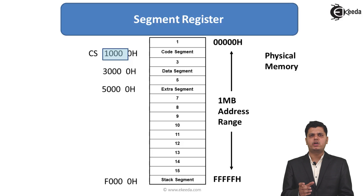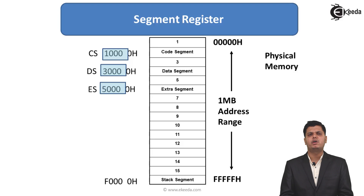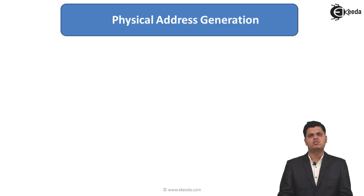Now we are going to see what is stored in these segment registers. As defined, only the upper 16 bits of the starting address are stored. So the code segment register stores 1000H, the data segment register stores 3000H, the extra segment register stores 5000H, and the stack segment register stores F000H.